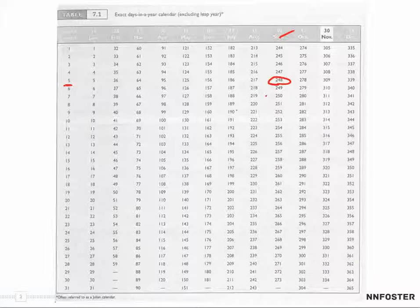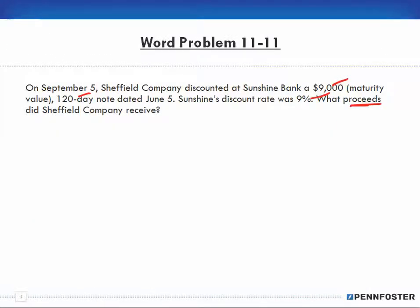Let me give me one second here to think about this. Okay, because the question says on September 5th, Sheffield discounted a 120-day note dated June 5th. If we look at, and this is why the timeline is important, it says Sunshine Bank 120-day note dated June 5th. So this is June 5th.